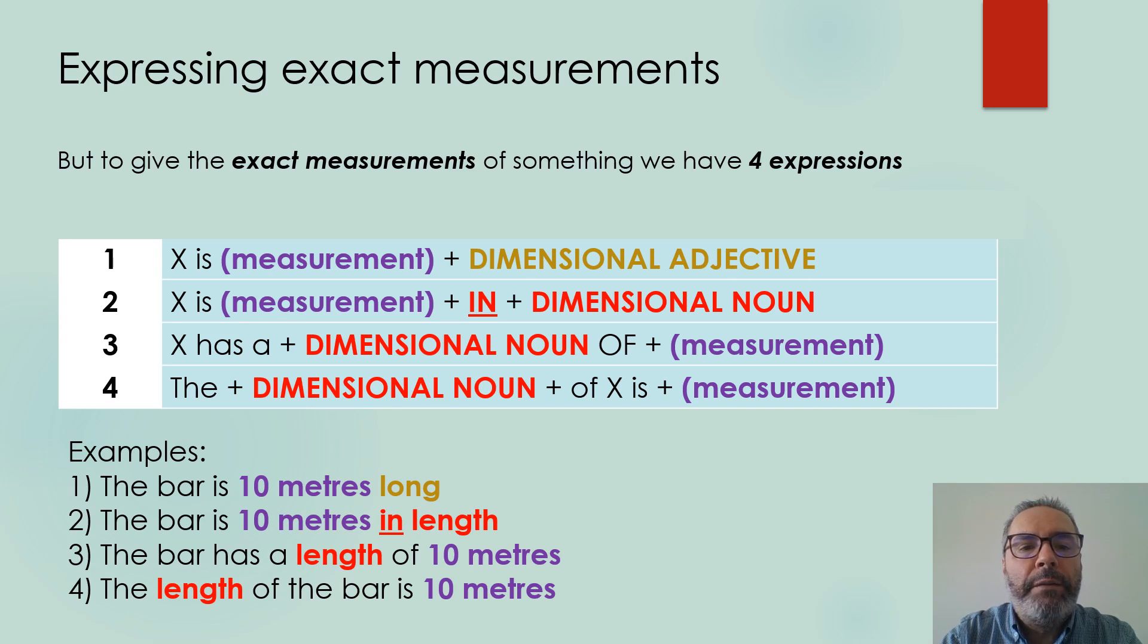And the last one is very similar. The plus the dimensional noun plus of something is a measurement. Example 4. The length of the bar is 10 meters.